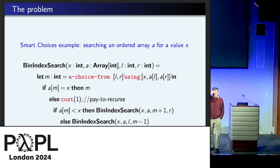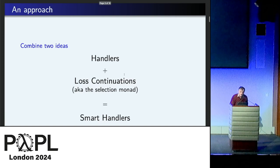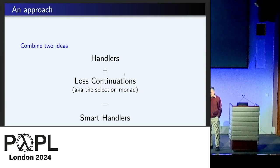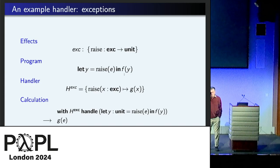So it might be natural to have some system with continuations. The choice is made given a continuation that tells you what the cost of that choice is going to be. So that's the kind of idea. So overall, we're going to have handlers, and we're going to combine them with loss continuations, and we'll give them the self-aggrandizing name of smart handlers. It's only as smart as you write. So next couple of slides are just a quick introduction to handlers for those who haven't seen it.